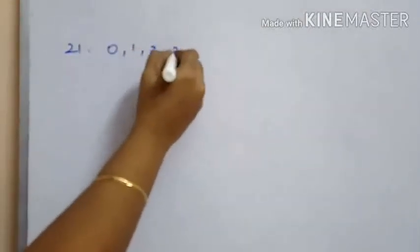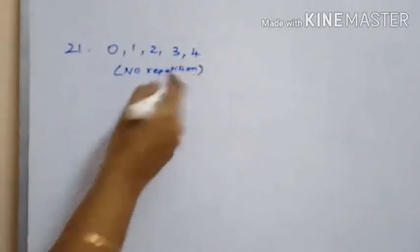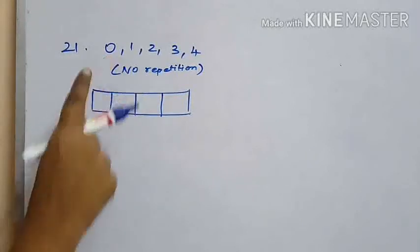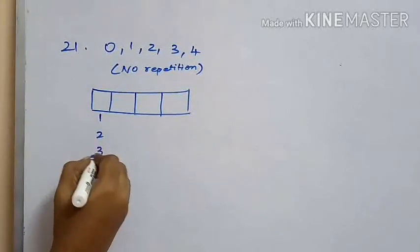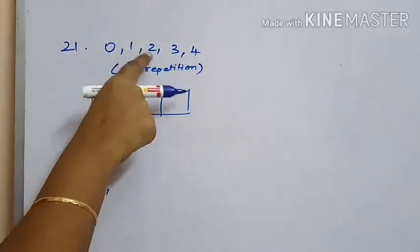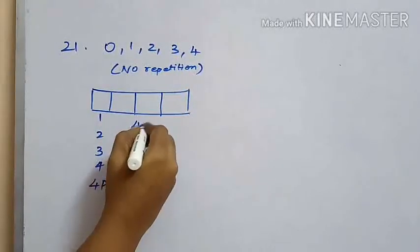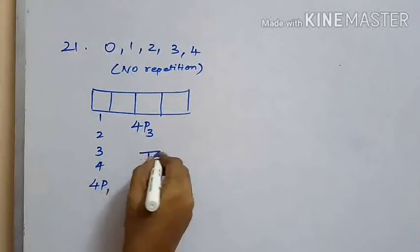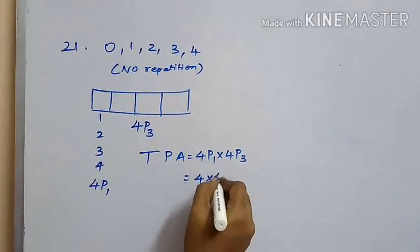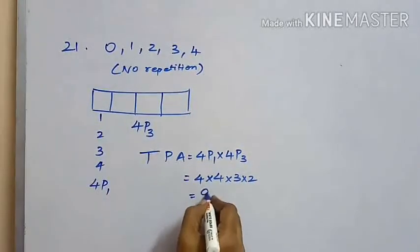Question 21: four-digit numbers to be formed out of the figures 0, 1, 2, 3, and 4, with no digit repeated. Dividing into 4 slots, the first slot cannot have 0, so the other four numbers can be arranged there in 4P1 ways. The remaining three slots can be occupied by the rest of the four numbers including 0, in 4P3 ways. Therefore the total possible arrangements are 4P1 into 4P3, which equals 4 into 4 into 3 into 2, which is 96. Option C is the answer.